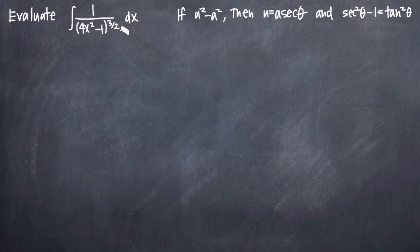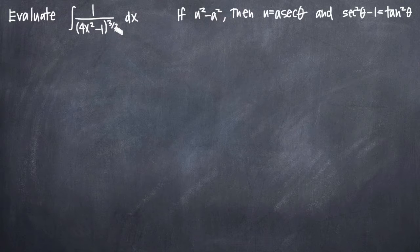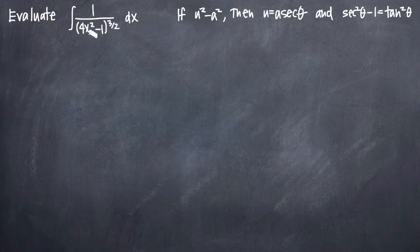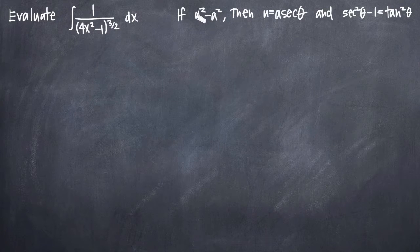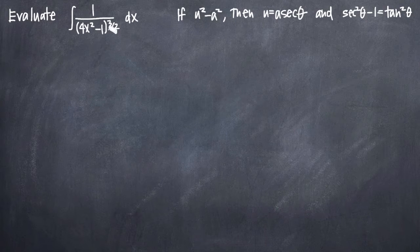Since we're using trigonometric substitution, the first thing we want to do is look for something in our function that's in the form either u² - a², a² - u², or u² + a². In this case, u will be our variable — in this case x — and a will be a constant. We're going to identify that we have the form u² - a², because we have the square of a term that involves our variable x and the square of a constant. We have the difference of those two things.